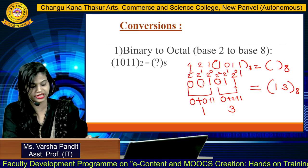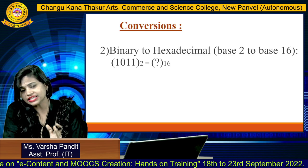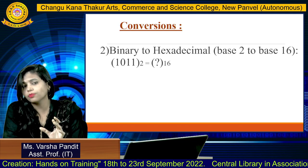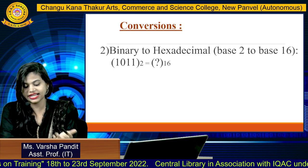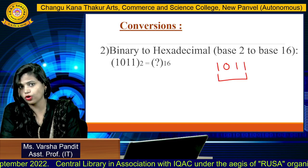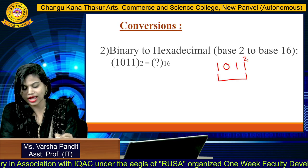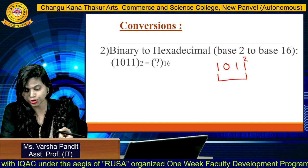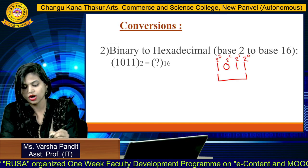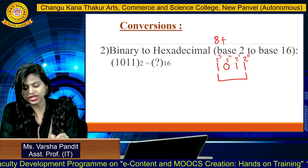The next conversion is binary to hexadecimal, that is base 2 to base 16. It is similar to binary to octal, except instead of groups of three digits, you take groups of four digits. For the example 1011 base 2, we already have four digits so no zeros need to be added. Assign weightage values: 2 raised to 0, 2 raised to 1, 2 raised to 2, and 2 raised to 3. The value of 2³ is 8.